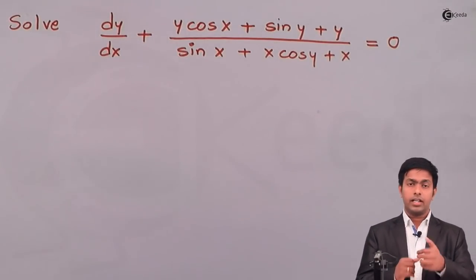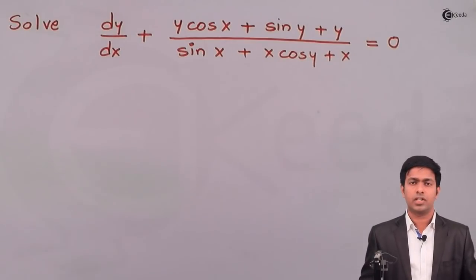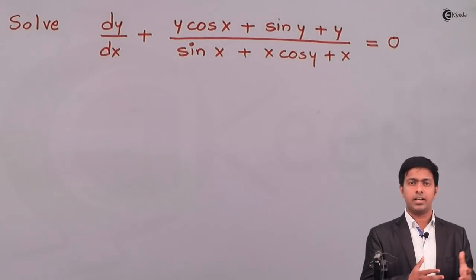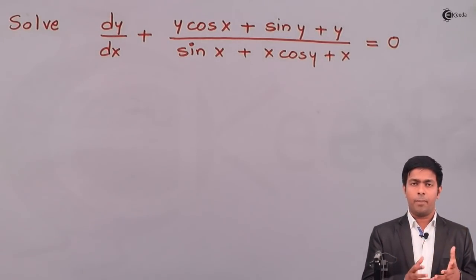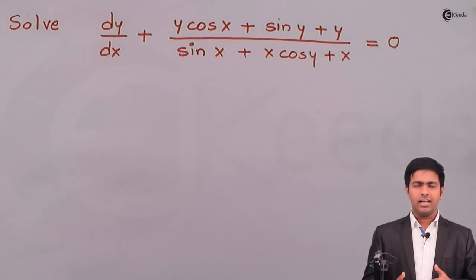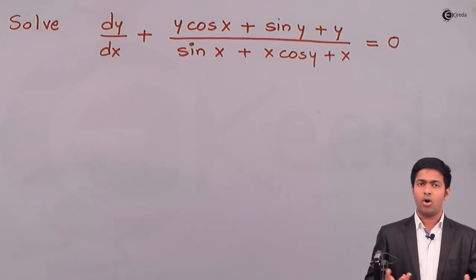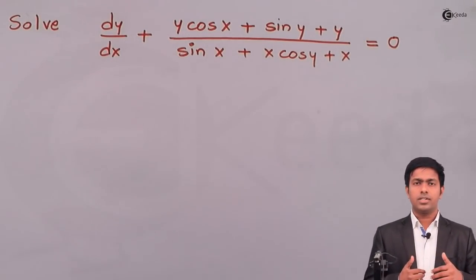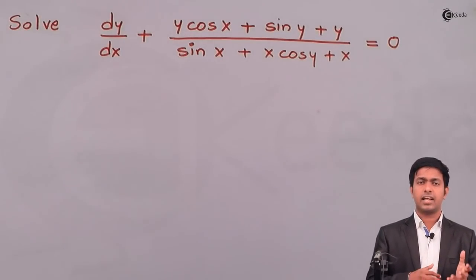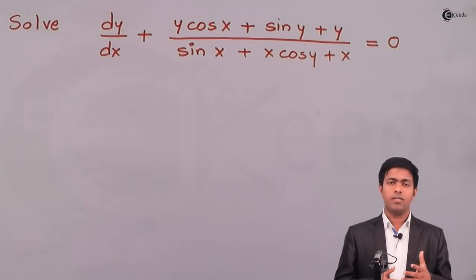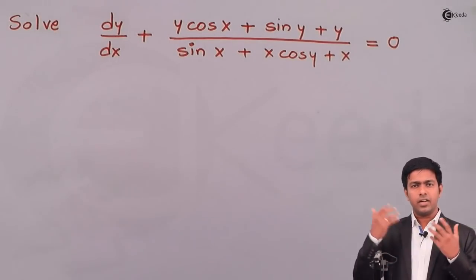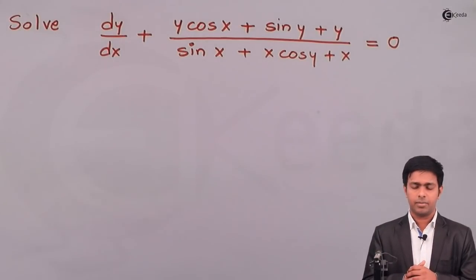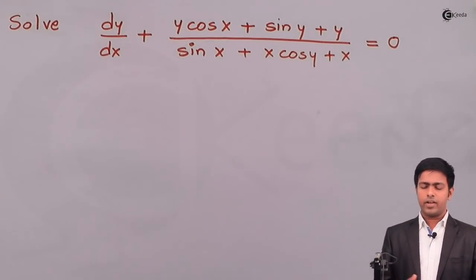To solve this differential equation we have many methods available — we may use the variable separation method or other methods. Since it is almost difficult to separate x and y on both sides, we will check whether the given differential equation is exact or not. If it is exact, we'll solve by the exact differential equation method; if not, we will reduce it to make it exact.